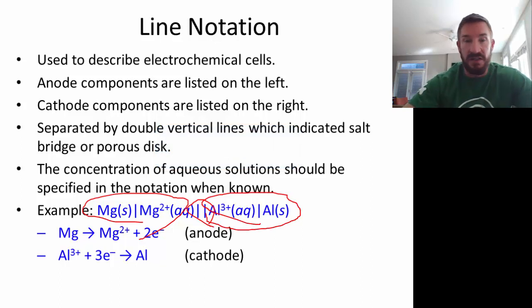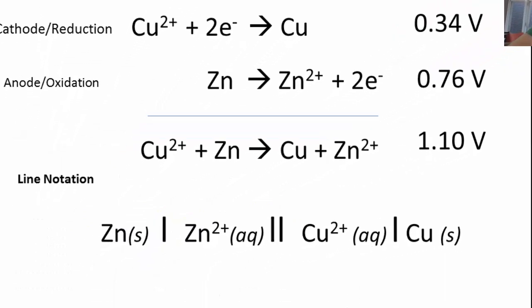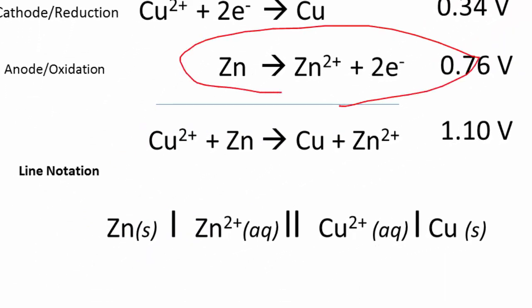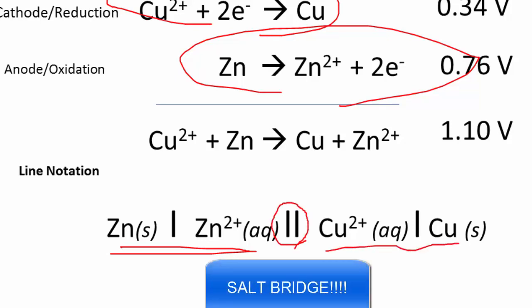Okay, let's keep going. We've got this cell. Let's go over what this line notation would be. Remember, we just put the anode on the left. So here we have our anode, and then our cathode — the copper, that's our reduction — on the right. And then we have it separated by a salt bridge. So that's our line notation.